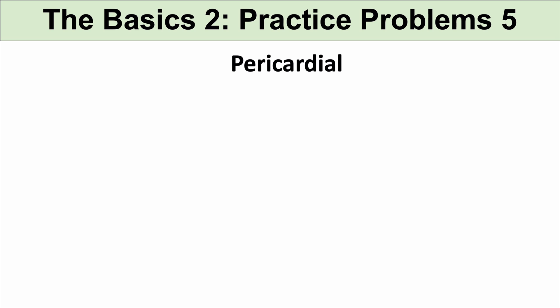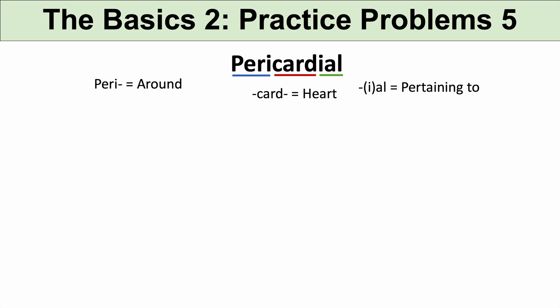Another practice problem is pericardial. The prefix peri means around — you can think of words like perimeter. The prefix card means heart — you can think of cardiac. And al means pertaining to. So pericardial means pertaining to around the heart. You can think of pericardial effusion, fluid around the heart.